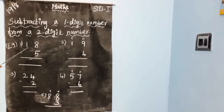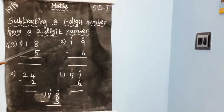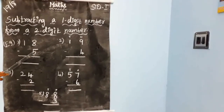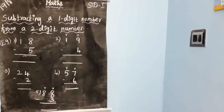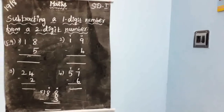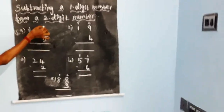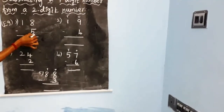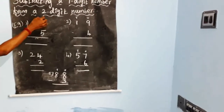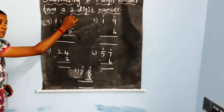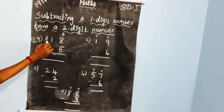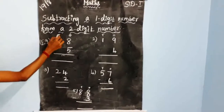Look at the example here. Eighteen is a two-digit number, five is a one-digit number. Now look at eighteen minus five. The first place is the ones place, and the second place is the tens place.